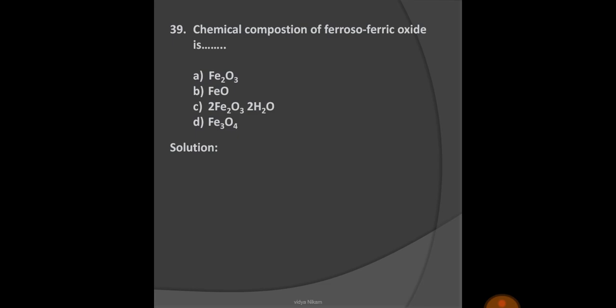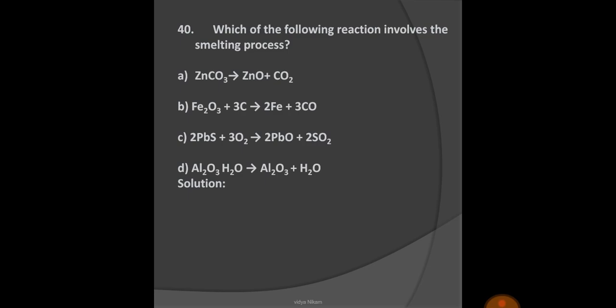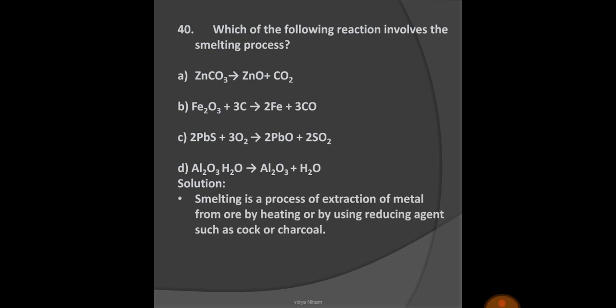Next question: Which of the following reactions involves the smelting process? We know that smelting is the process of extraction of metal from ore by heating or by using reducing agents like coke and charcoal. Here, option B, in which Fe2O3 + 3C → 2Fe + 3CO, this reaction is involved in the smelting process. Option B is the right option.